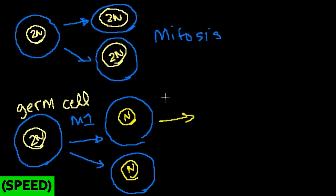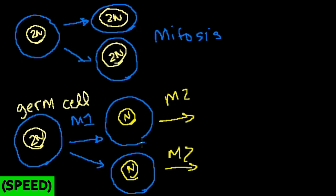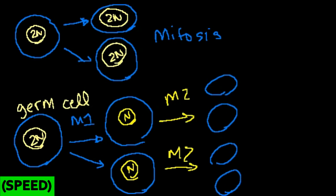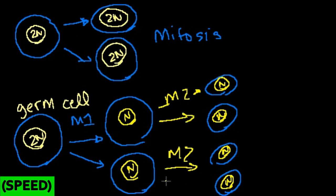In meiosis II, these cells get split in a mechanism very similar to mitosis. The end product is four cells, each of which are haploid. You essentially split up your chromosomes and end up with half in each one. In mitosis you start with N and end up with two cells each at N — you preserve the number of chromosomes. In meiosis you end up with four cells each at half N.